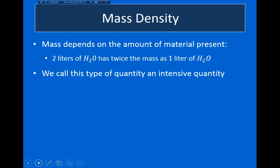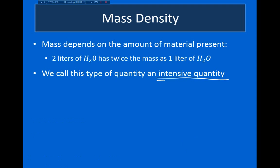One of the basic properties we use to describe materials is mass. When we talk about fluids, we have to be careful about how we describe the mass of a liquid. For example, two liters of water weighs twice as much as one liter of water — one liter of water has a mass of one kilogram, so two liters has a mass of two kilograms. The mass of a liquid is a property that depends on the amount of liquid you have, and this type of property is called an intensive property.